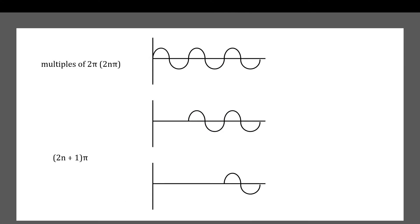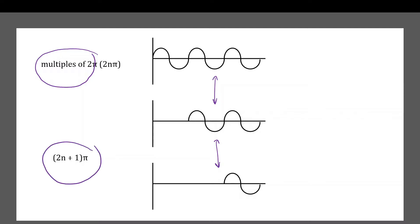Constructive interference occurs when two waves meet and they are in phase, and they can be in phase at different times. Waves will be in phase if they are any multiple of 2π away from each other — where n is a whole number, 2πn is the phase difference. To be in antiphase, you need a phase difference of (2n+1)π, which will always give antiphase and perfect destructive interference.